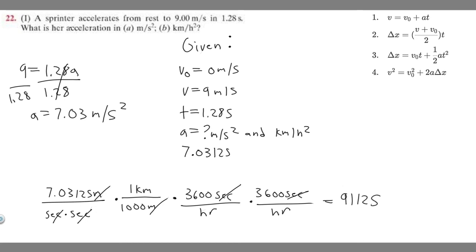Keep in mind the units we're using: kilometers per hour squared. This is your answer to B: 91,125 kilometers per hour squared. And your answer to A is 7.03 meters per second squared.